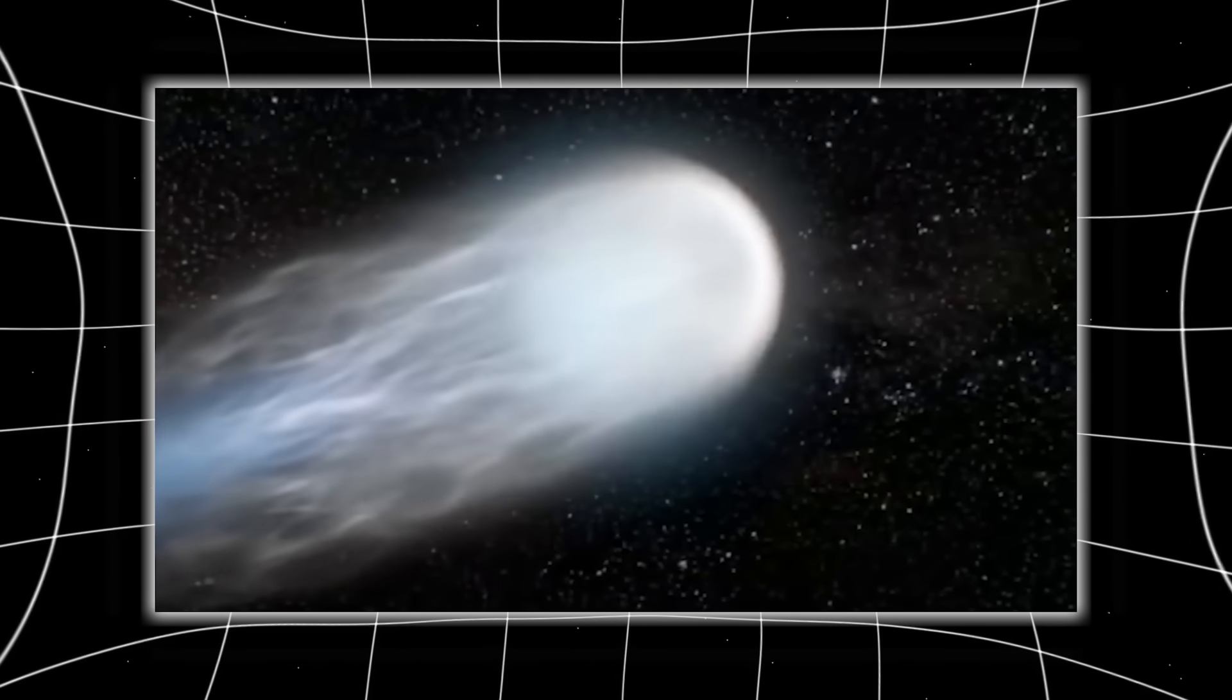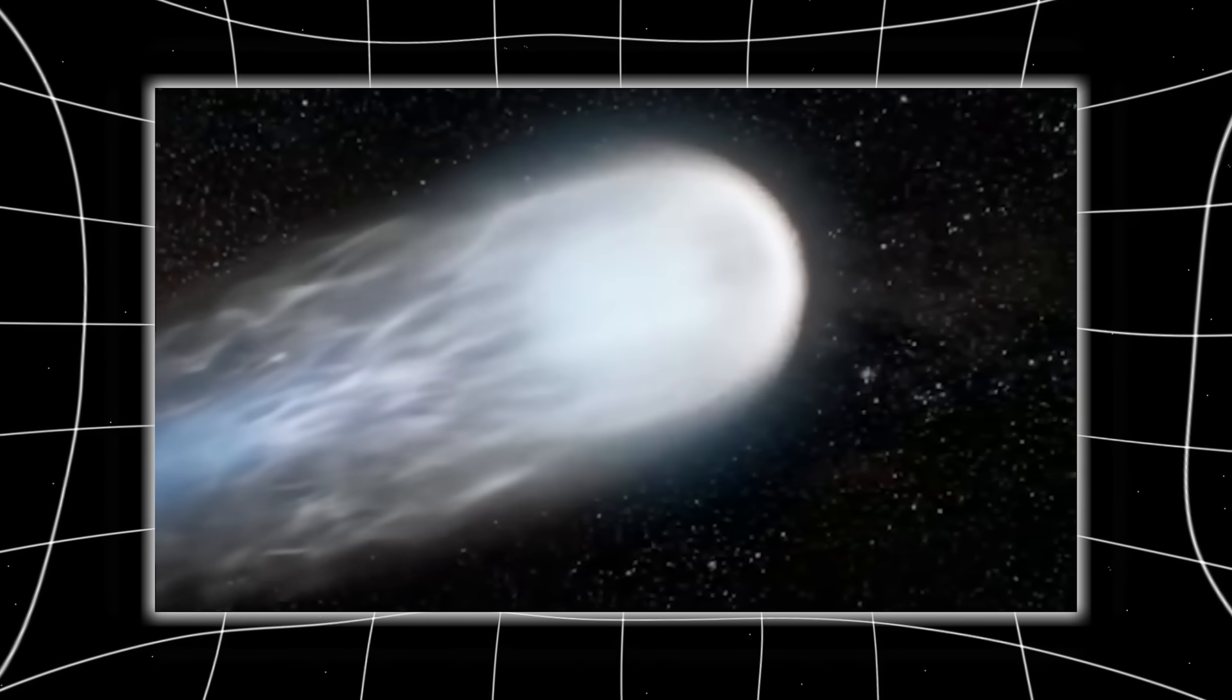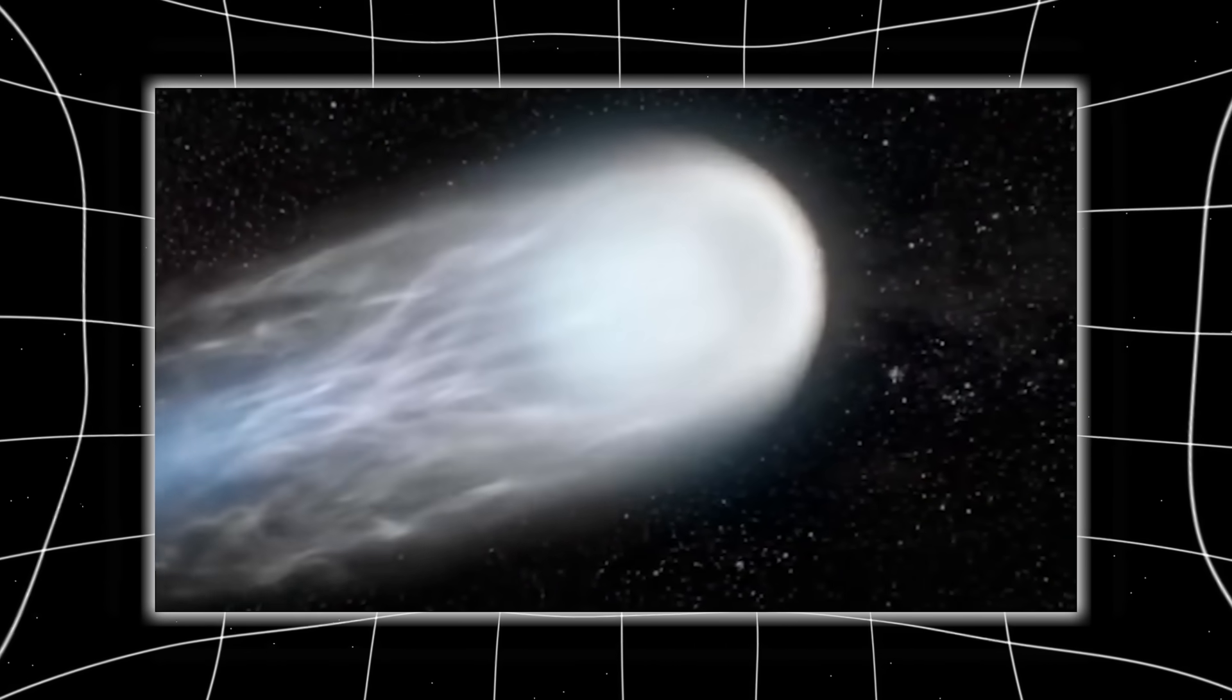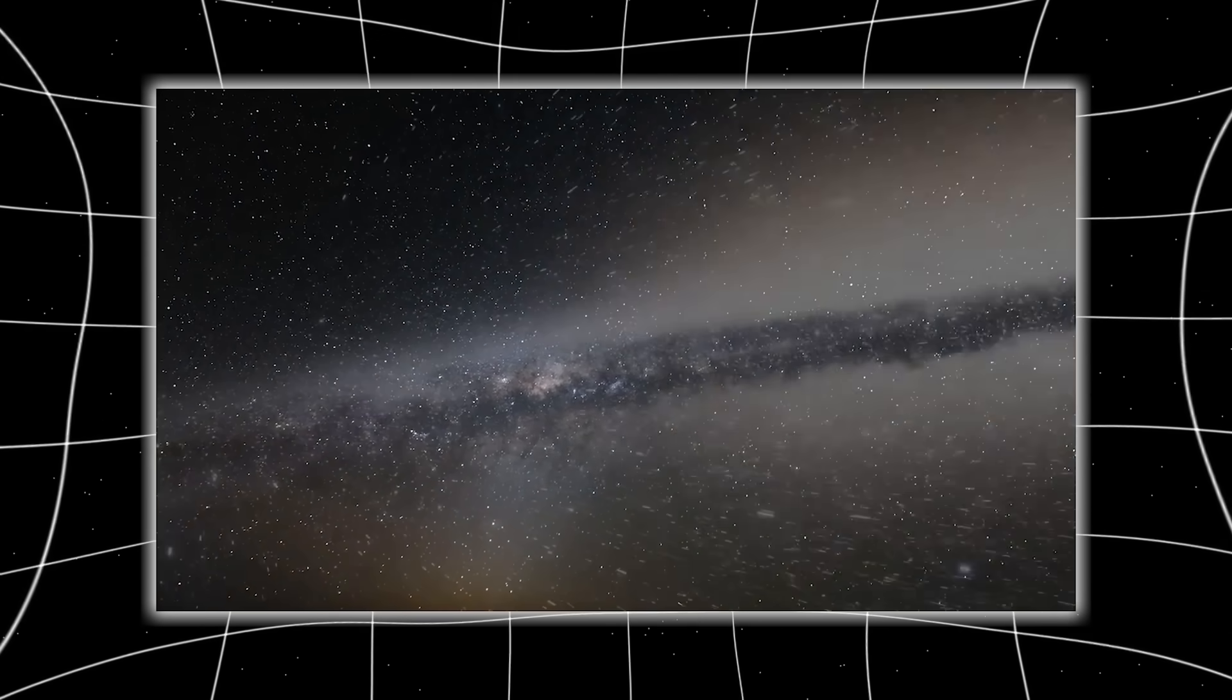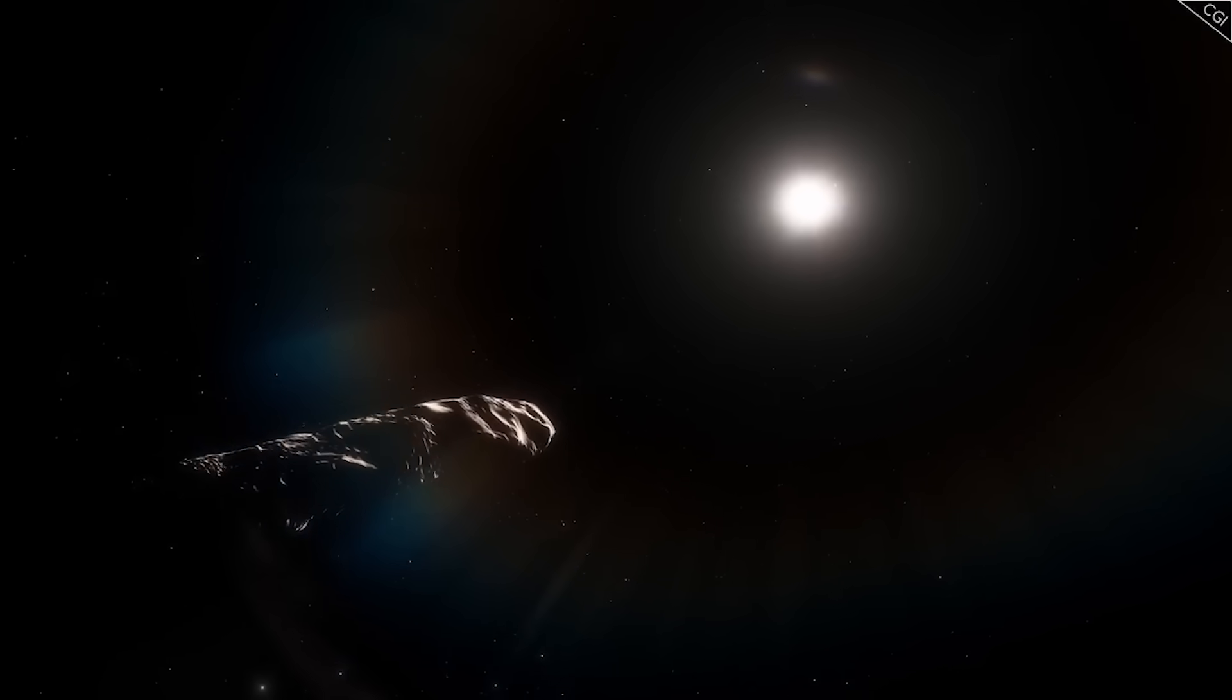When Ray removes background stars from his captures, he reveals something unexpected. The central region of the coma appears pointed, not round. This structure has shape, directionality, and perhaps rotation. Ray isn't claiming the nucleus is resolved. No telescope on Earth or in orbit can do that with current technology. But the pointed structure is undeniably present.